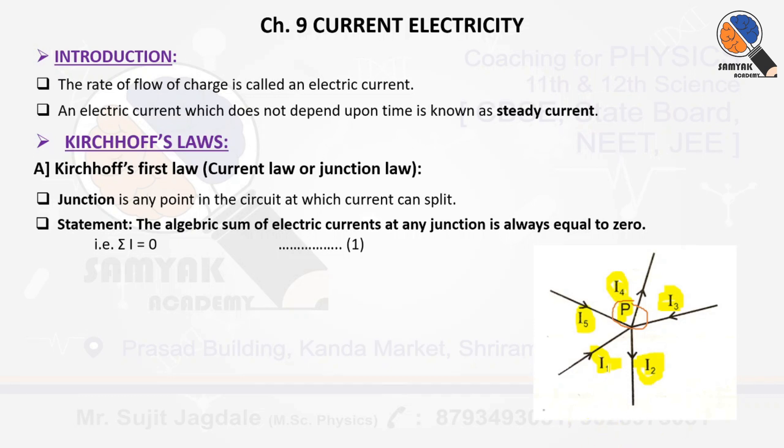What is the direction of I1? As compared to the junction, I1 is traveling towards the junction. Then I2 is traveling away from the junction. Again, I3 is traveling towards the junction. I4 is traveling away from the junction. And I5 is traveling towards the junction. Now this is the important condition in sign convention.